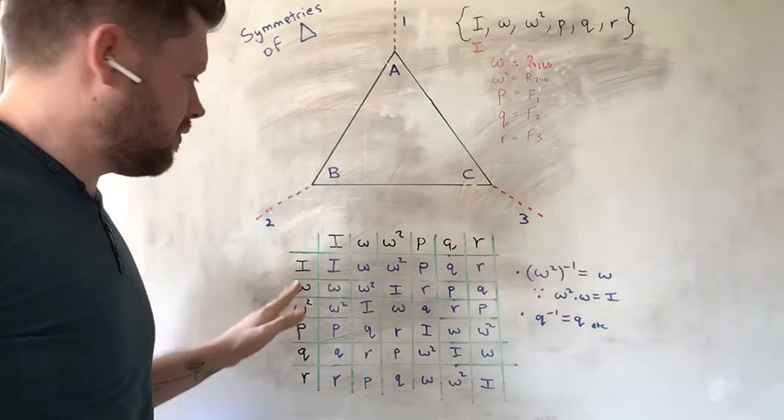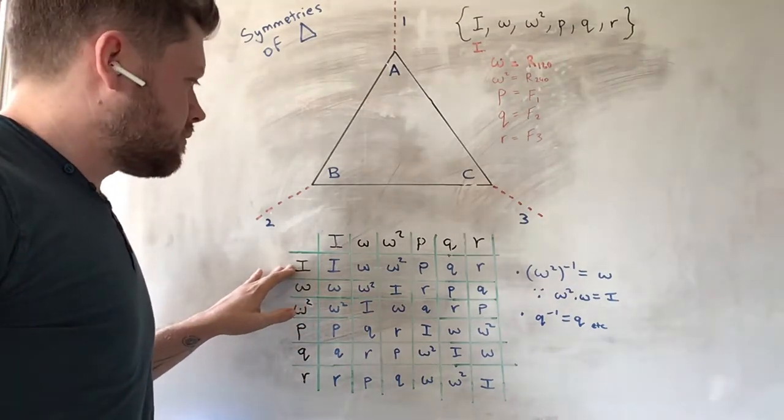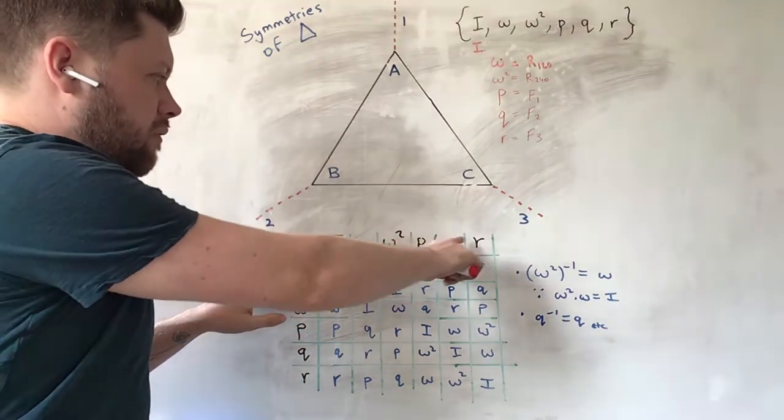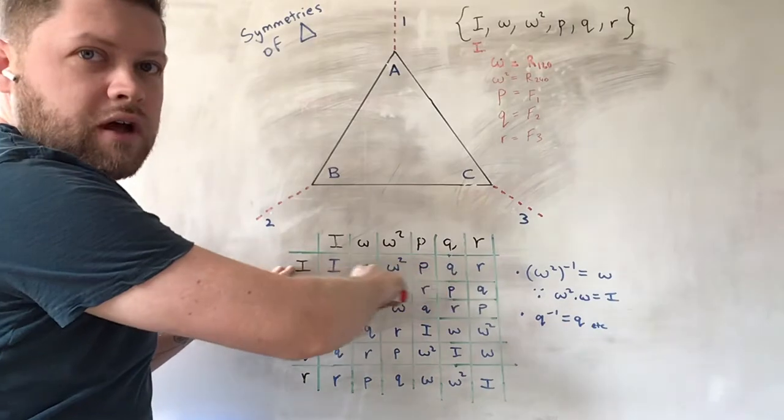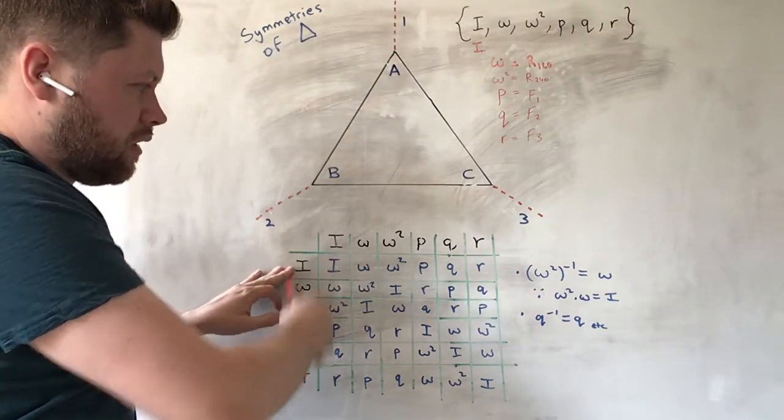And, as always, we multiply first with the row. So, if we multiply I by each of these elements here, they reproduce themselves as normal as we would expect. Same in this column here.